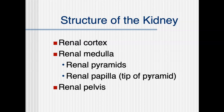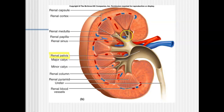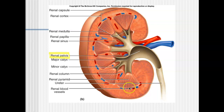We're going to distinguish the renal cortex and the renal medulla, just as we did in lab. The renal cortex is this outer rind — all that outer area. The renal medulla is what's left inside. So essentially: renal cortex on the outside and renal medulla on the inside.